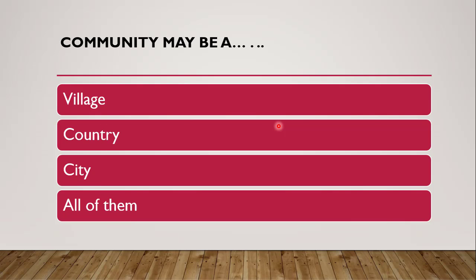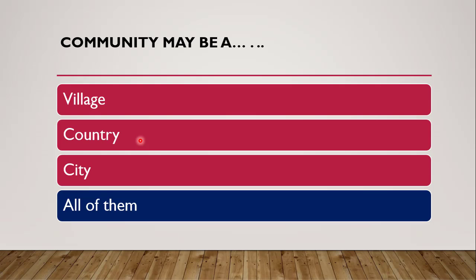The second question: Community may be a — can it be a village, a country, a city, or all of them? Community is nothing but a group of people in a particular population. So it can be a village, country, or city. The correct answer is all of them — community can be a village population, a country population, or a city population.